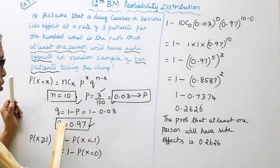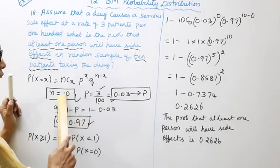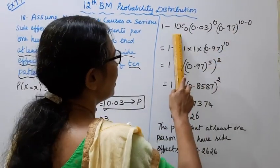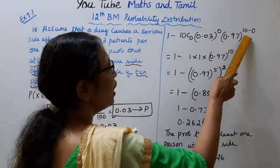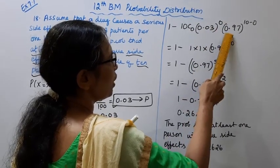1 minus p of x equal to 0. nCx p to the power x q to the power n minus x. 10C0, 0.03 to the power 0, 0.97 to the power 10 minus 0.